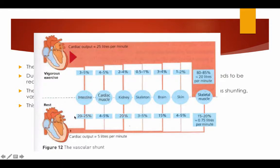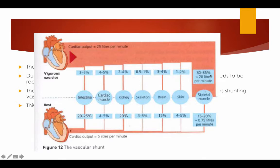As you can see, at rest 25% of your blood is in the digestive system and 5% in your cardiac muscles. However, when we start to do vigorous exercise, only 3–5% is in your digestive system and 4–5% in your cardiac muscles. At rest our skeletal muscles receive about 15–20%, whereas during vigorous exercise, 80–85% of our blood is in our skeletal muscles.